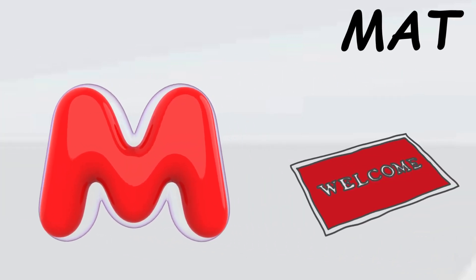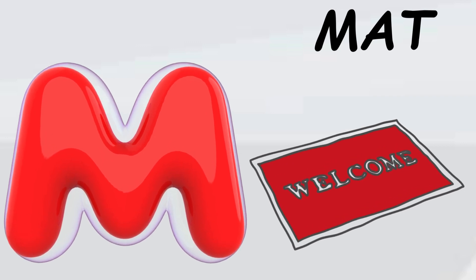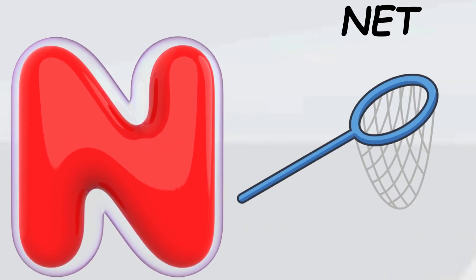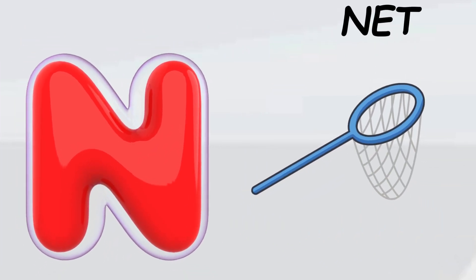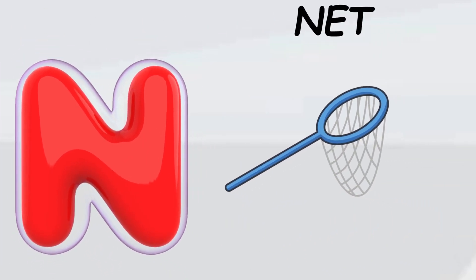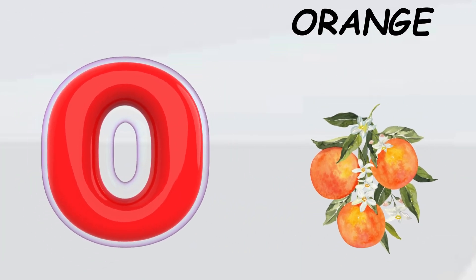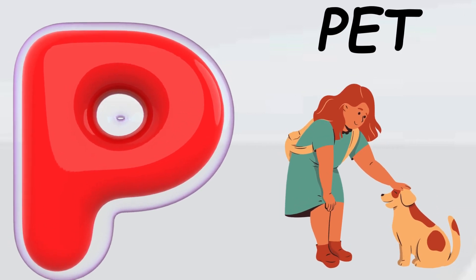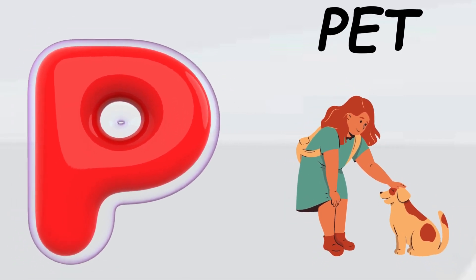M is for mat, m-m-mat. N is for net, n-n-net. O is for orange, o-o-orange. P is for pet, p-p-pet.